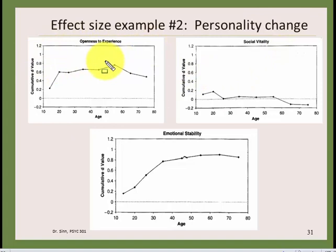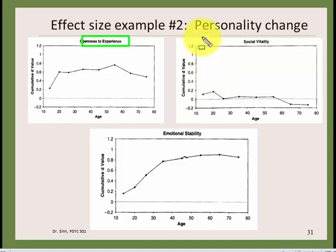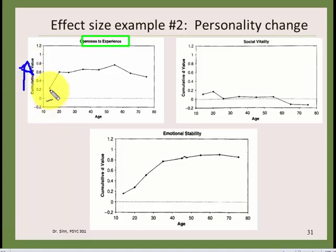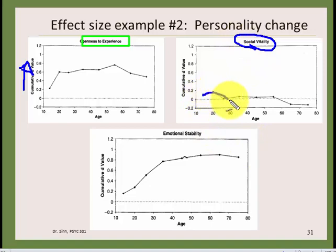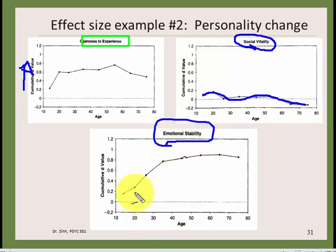Another example looks at personality change over the lifespan. We think of personality as a stable trait, but it changes quite a bit. Openness to experience — how willing you are to try new things and new ideas — increases in your 20s and 30s, peaks around your 60s, then comes down a little. Social vitality, like how extroverted you are, stays pretty even through life and then declines slightly in older age.